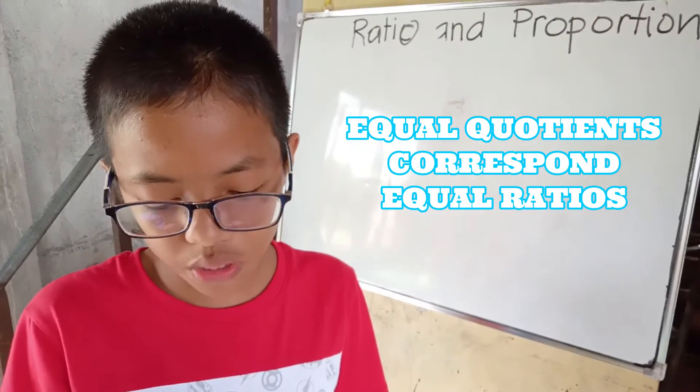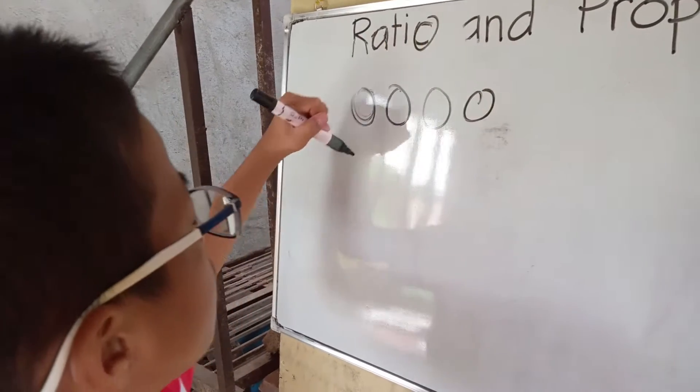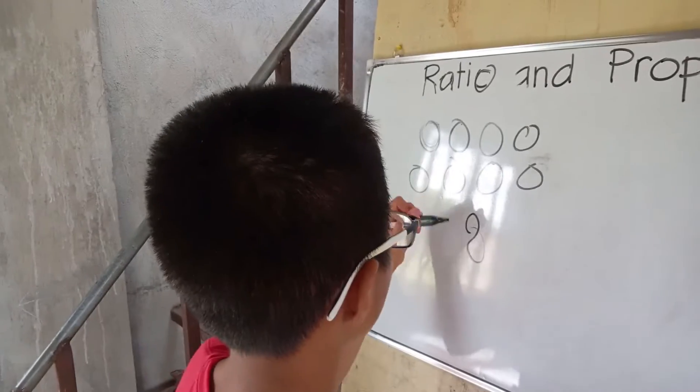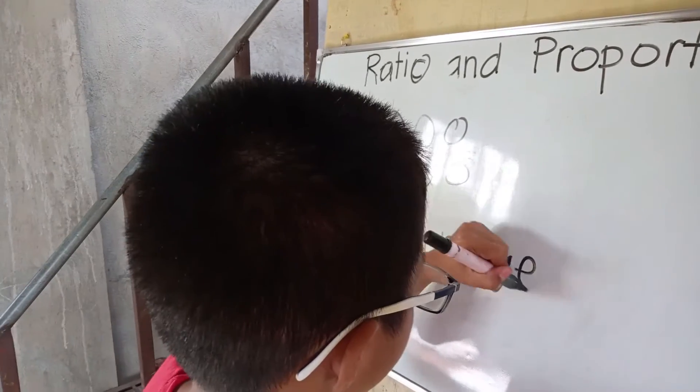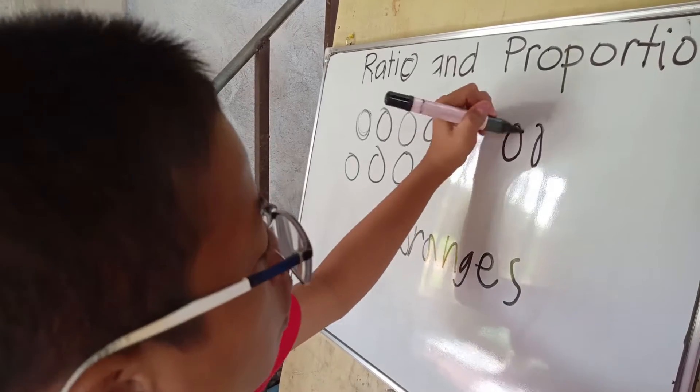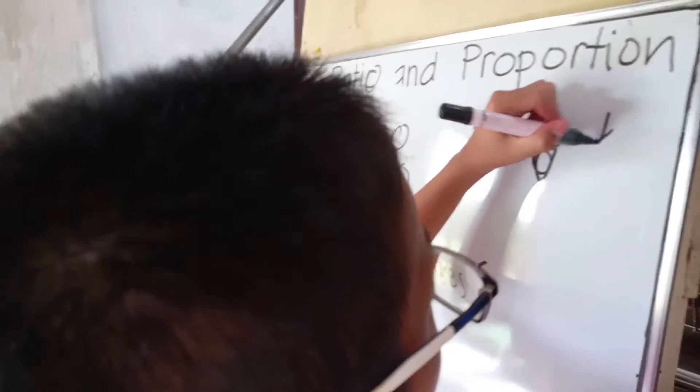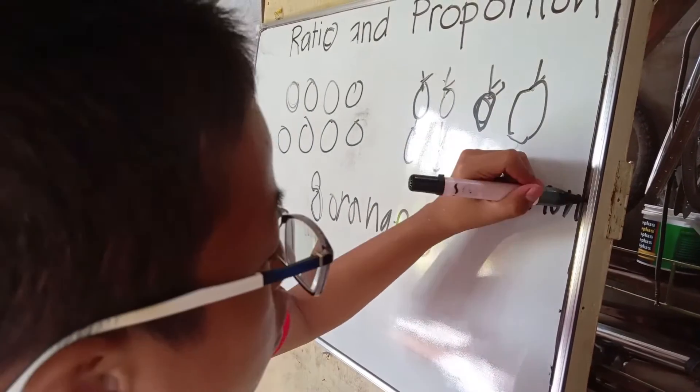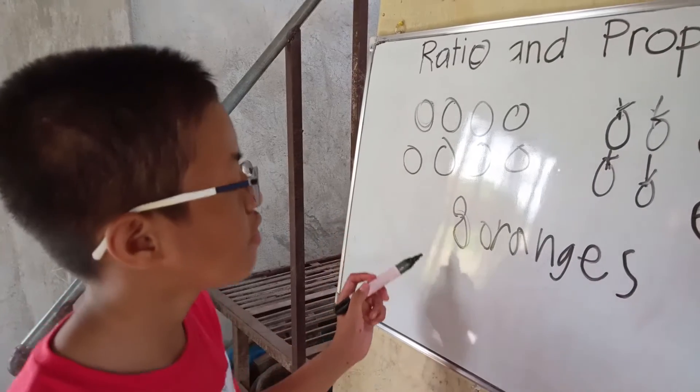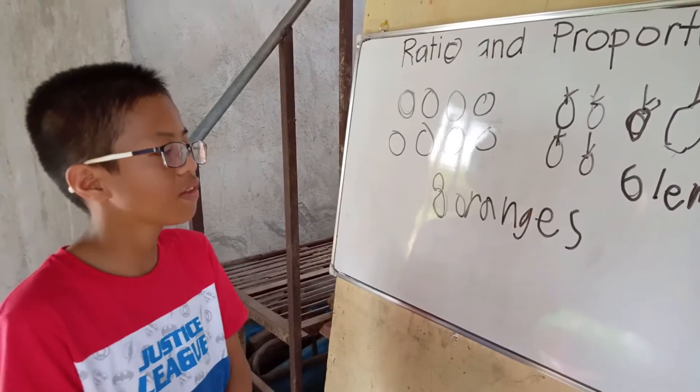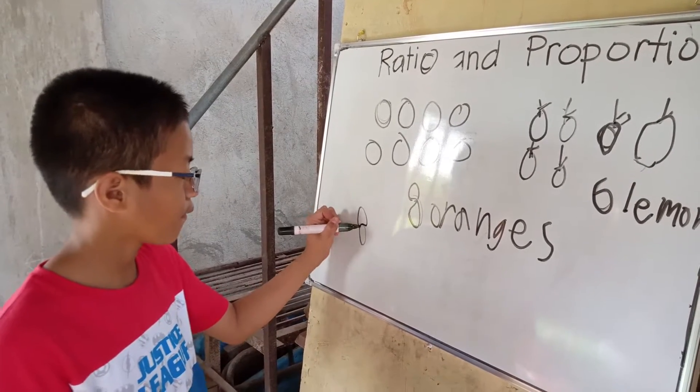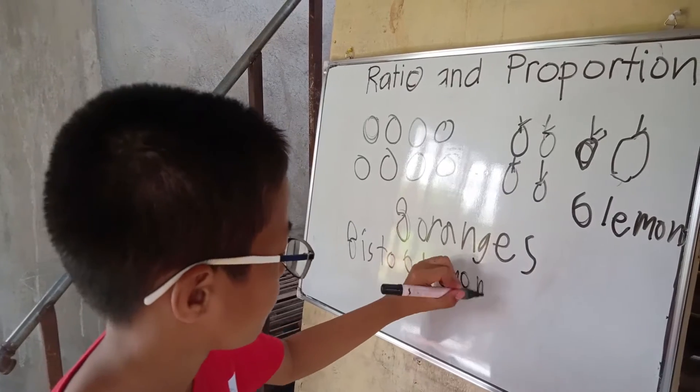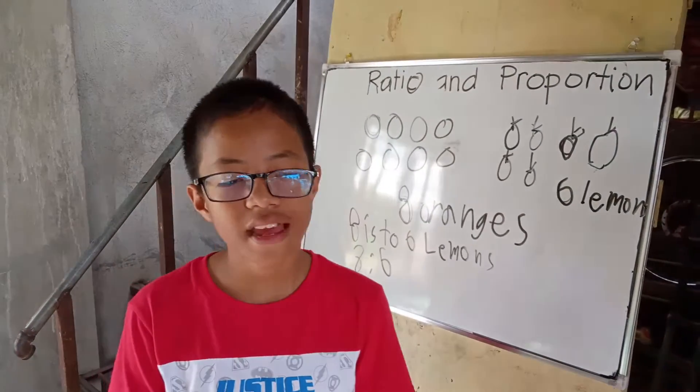Equal quotients correspond to equal ratios. So this is 8 oranges. So these are 8 oranges and 6 lemons. So the ratio of oranges to lemons is 8 is to 6. So that's what ratio is.